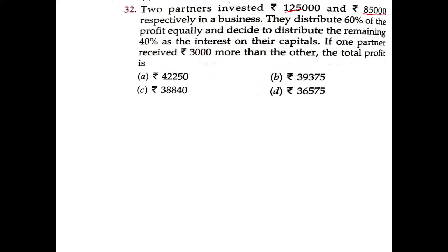Two partners invested $125,000 and $85,000 respectively in a business. They distributed 60% of the profit equally and decided to distribute the remaining 40% as interest on their capitals. If one partner receives $3,000 more than the other, then find the total profit.